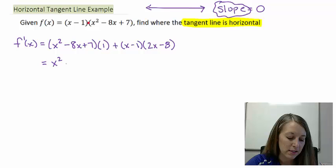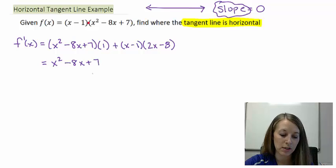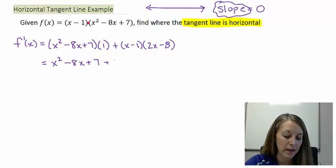Let me simplify this. The first one, any polynomial times 1 is just itself, and in the second one I'm going to FOIL it. So x times 2x gives me 2x squared. Outside is negative 8x. Inside is negative 2x, so that gives me negative 10x. And negative 1 times negative 8 gives me positive 8.